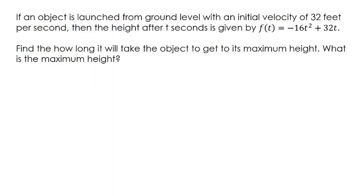Now I've got one more example. If an object is launched from ground level with an initial velocity of 32 feet per second, then the height after t seconds is given by f(t) = -16t² + 32t. Find how long it will take the object to get to its maximum height and what is the maximum height. Several different ways of doing this, but I'm gonna do it in a way that uses vertex form.